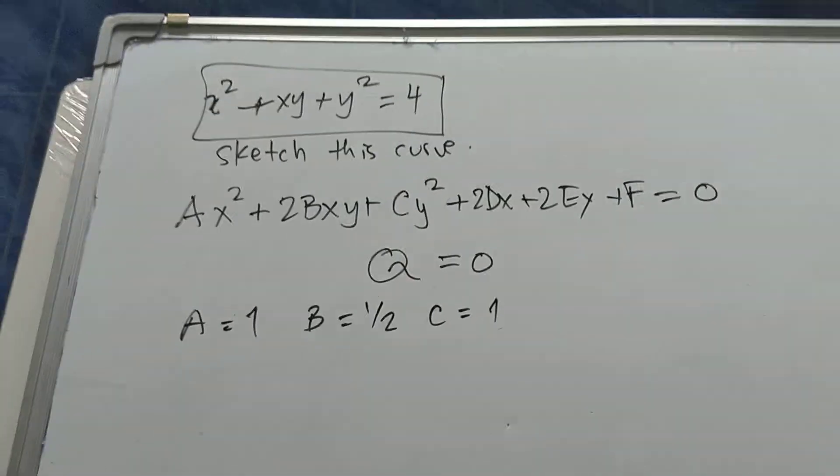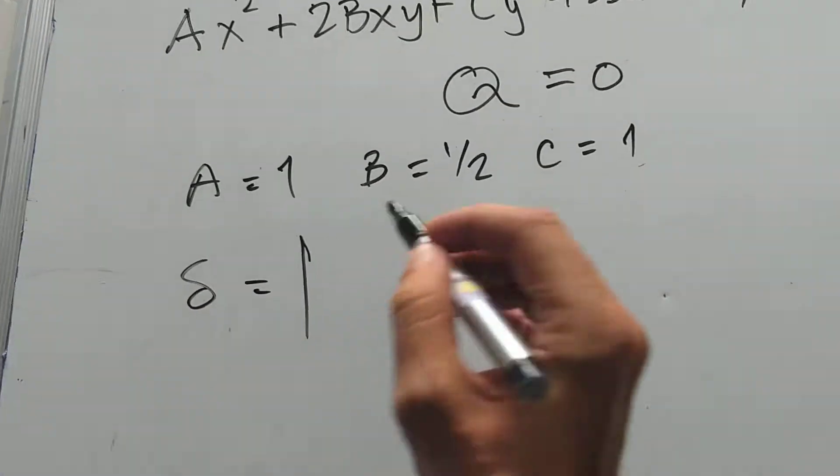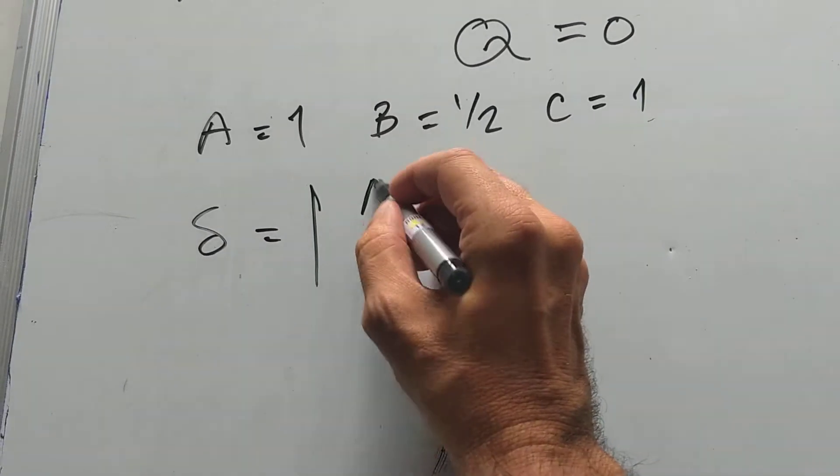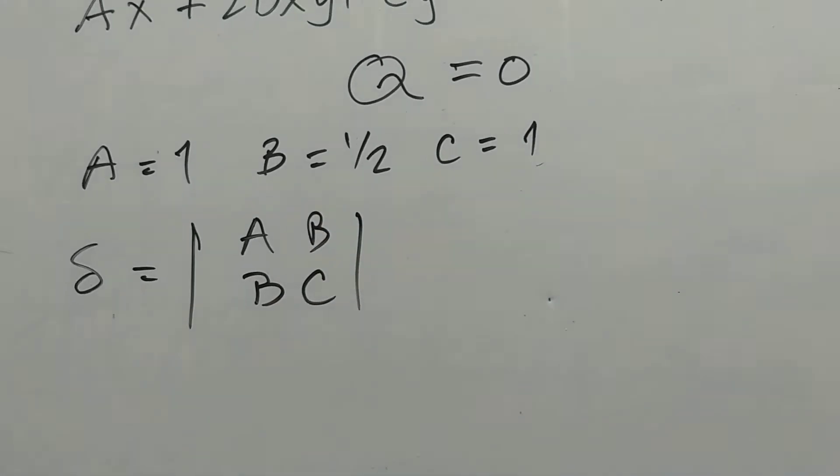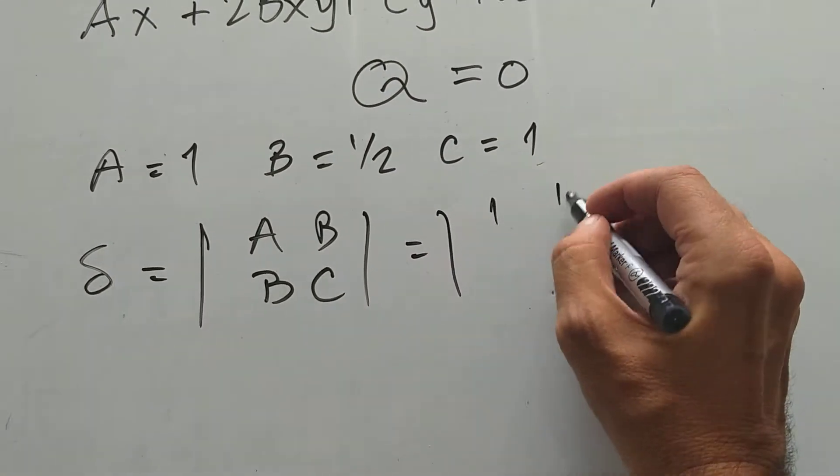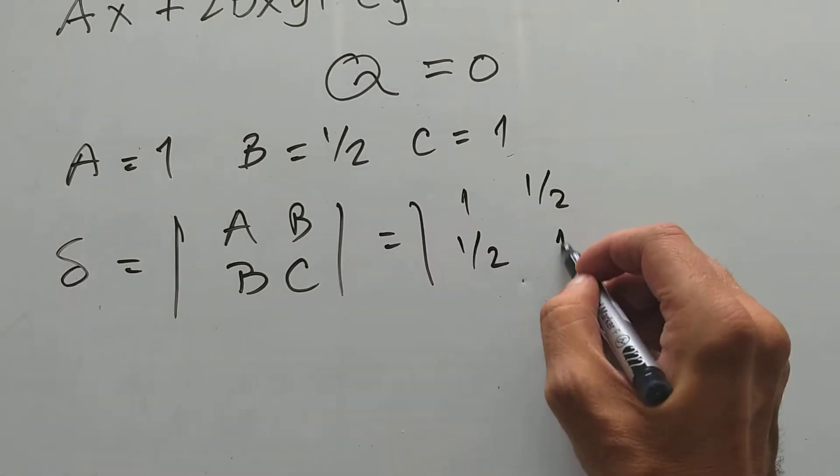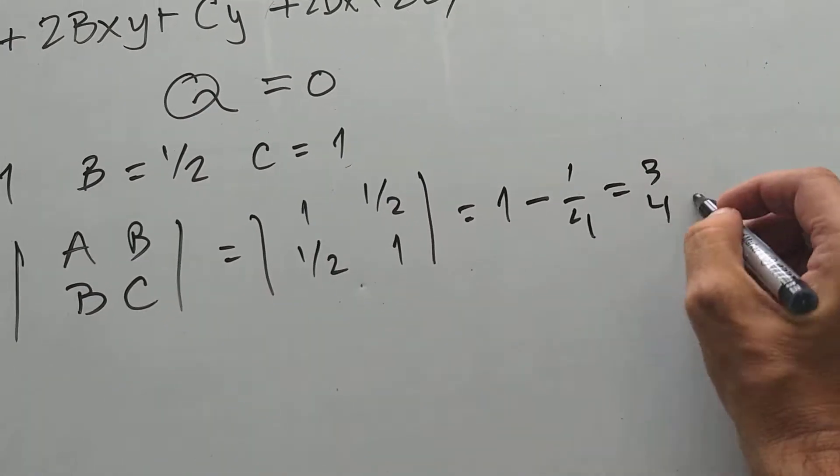Now, there's two determinants that we can look at. First determinant, call it little delta: |A B; B C|. This is going to tell us what kind of curve we have. Alright, and that's |1, 1/2; 1/2, 1|. I do this determinant. It's 1 minus 1 quarter. That's 3 quarters.